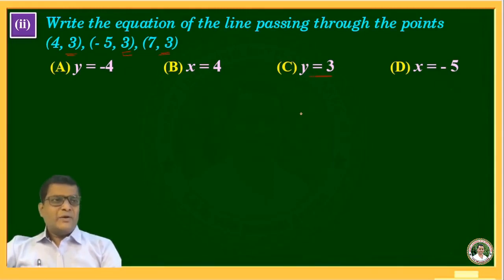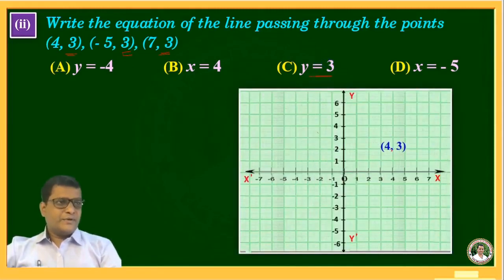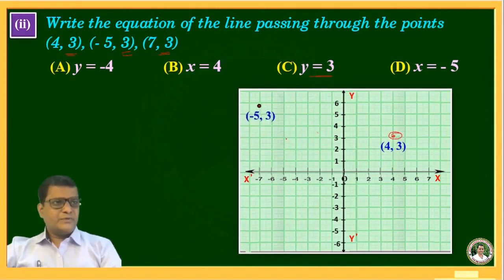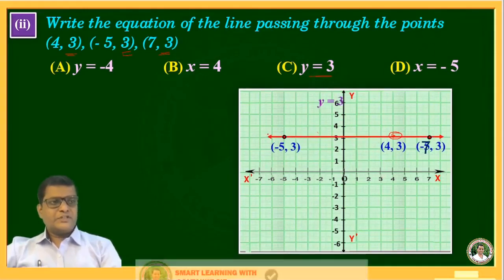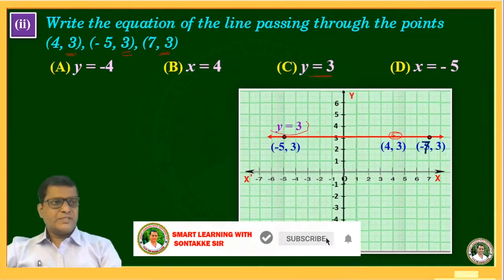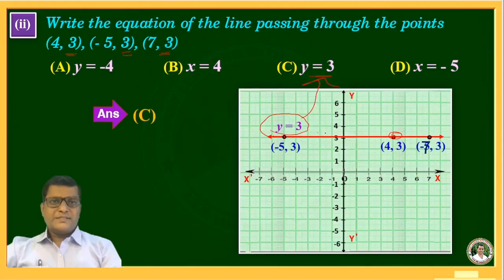We will verify by showing these points on a graph. The first point (4, 3), the second point (-5, 3), and the last one (7, 3) are plotted. If we draw the line through them, it is parallel to the x-axis with equation y = 3, which is given in option C. Therefore, option C is the answer.